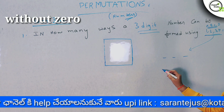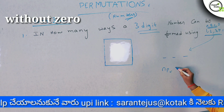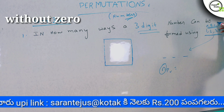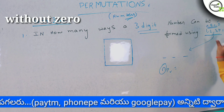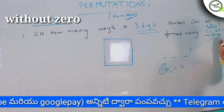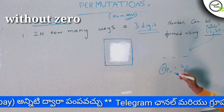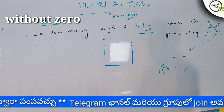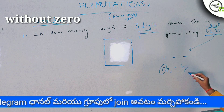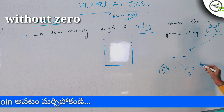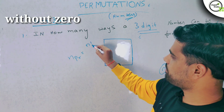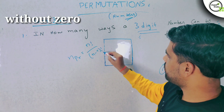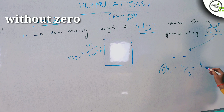We will write the formula NPR. We have 4 letters, so n = 4. We need to fill 3 digit places, so r = 3, giving us 4P3. The NPR formula is n factorial divided by (n minus r) factorial. So this is 4 factorial divided by (4 minus 3) factorial, which is 4 factorial divided by 1 factorial.